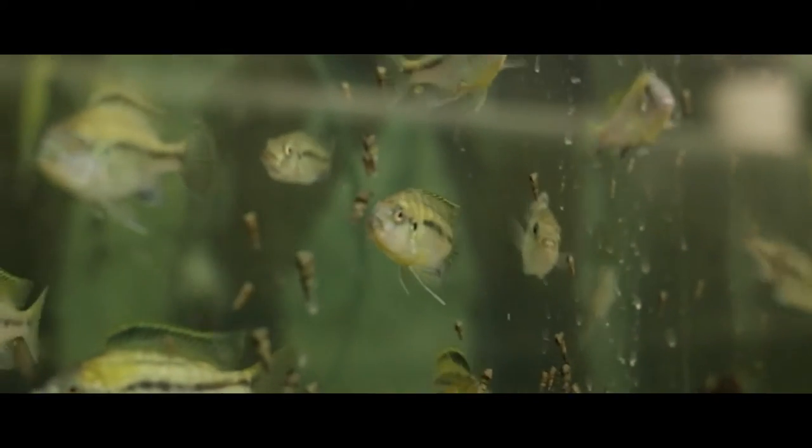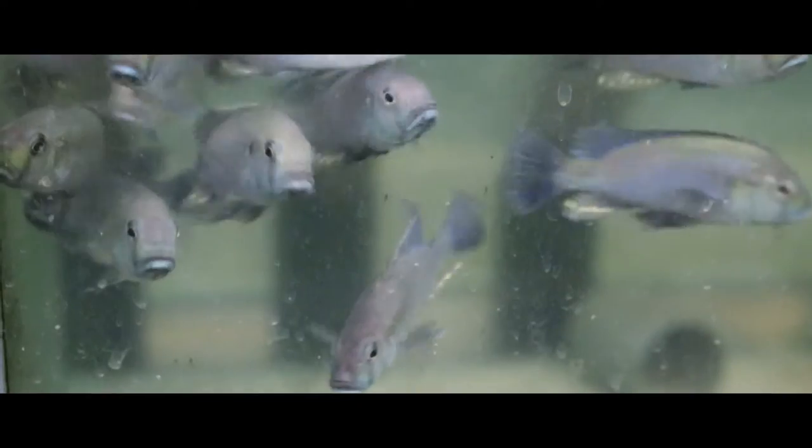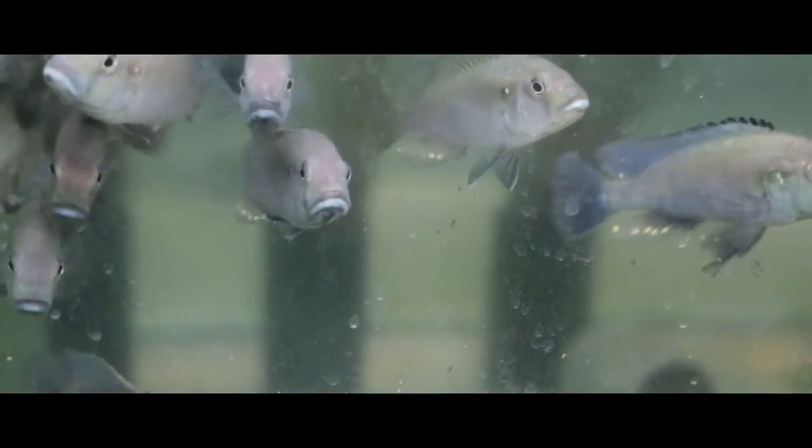These fish are famous among evolutionary biologists because hundreds of species have evolved within Lake Malawi within a space of a few million years. So it's essentially a classic case of evolution in action, where one species finds itself in a new habitat and it just diversifies to produce hundreds and hundreds of new species. There are hardly any other examples like this in the world.